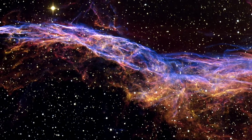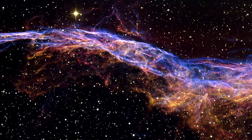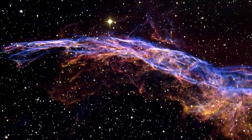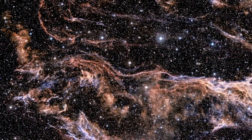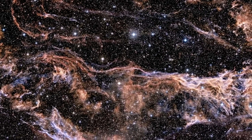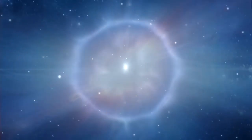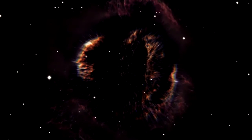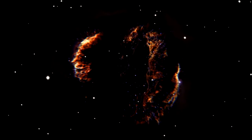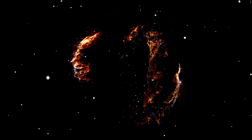The intertwined rope-like filaments of gas in the Veil Nebula result from the enormous energy released as the fast-moving debris from the supernova explosion plows into the surroundings and creates a shock front. This shock, driven by debris moving at 600,000 km per hour, heats the gas to millions of degrees. It is the subsequent cooling of this material that produces the brilliantly coloured glows.